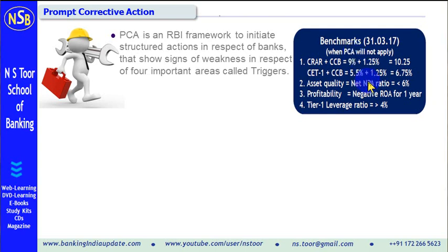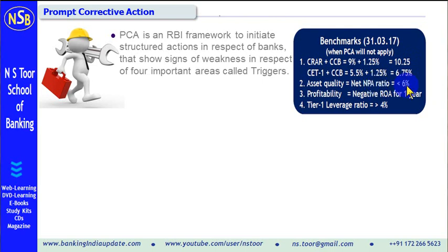For this purpose, Reserve Bank of India has fixed certain benchmarks. Any bank meeting these benchmarks will not be subject to PCA. The four benchmarks are: first, Capital to Risk Asset Ratio plus Capital Conservation Buffer must be at least 10.25%. Second, Common Equity Tier 1 capital plus CCB must be at least 6.75%. Third, the net NPA ratio should be less than 6%. Fourth, the bank should be earning profit — if there is a loss, it can only be for one year. And the Tier 1 leverage ratio should be more than 4%.